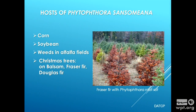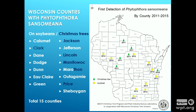Phytophthora sansomiana is particularly interesting because it has multiple hosts. Phytophthora sojae is only on soybeans, but sansomiana is also on corn, weeds, and alfalfa fields. We also found it during a totally unrelated survey on Christmas trees — in Abies, noble firs, balsam, Fraser, and Douglas fir — and it does serious damage to those trees. Combining data from those two surveys, we can find it in quite a few areas of the state, now in 15 counties. It's not in every field, but it's certainly widely distributed.